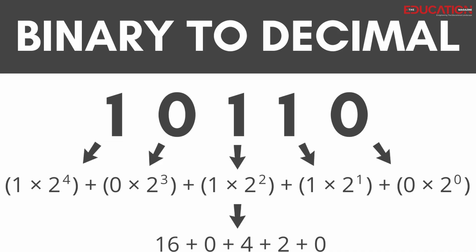To convert binary code to decimal, you can use the following steps: Start with the rightmost digit and multiply it by 2 to the power 0. Move to the next digit to the left and multiply it by 2 to the power 1. Continue moving left and multiply each digit by a successively larger power of 2. Add up the results of all of the multiplications.